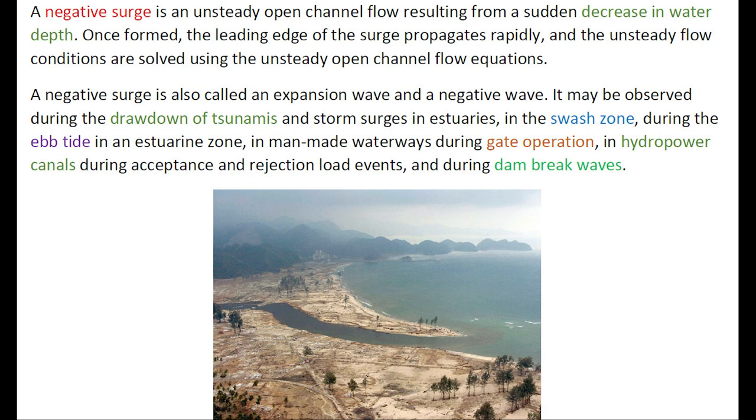A negative surge is also called an expansion wave or a negative wave. It may be observed during the drawdown of tsunamis and storm surges in estuaries, in the swash zone, during the ebb tide in an estuary, in man-made waterways during gate operation, in hydropower canals during acceptance and rejection load events, and during dam break waves.